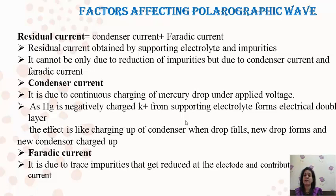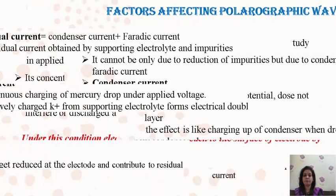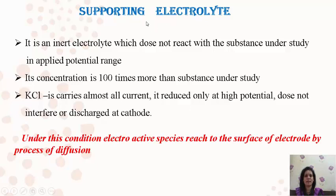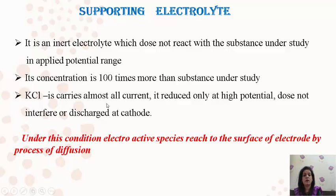The second contributor to residual current is the faradaic current — the current developed due to impurities in the supporting electrolyte. The supporting electrolyte added is KCl, which is an inert electrolyte. Its concentration is much higher — about one hundred times — than the substance under study. KCl carries almost all the current, gets reduced only at high voltage, and does not interfere during the study but is useful to carry current. During this condition, whatever current is produced by the electroactive substance is carried by the supporting electrolyte towards the electrode.